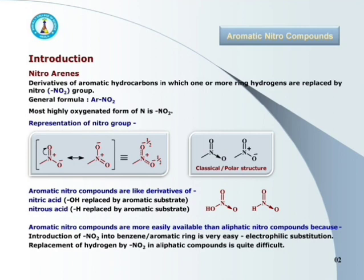Nitro group can be introduced into the benzene ring very easily by electrophilic substitution, but it is rather difficult to replace a hydrogen atom in aliphatic compounds by a nitro group. Hence, aromatic nitro compounds are more readily and easily available than aliphatic nitro compounds. Nitro group is the most highly oxygenated form of nitrogen atom.